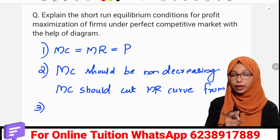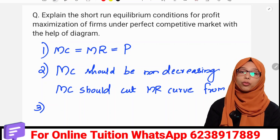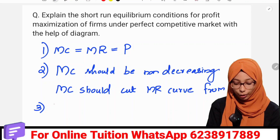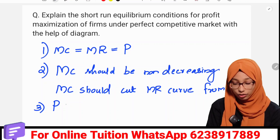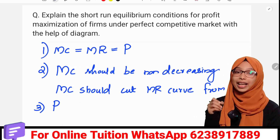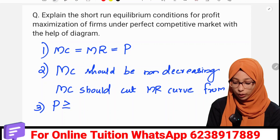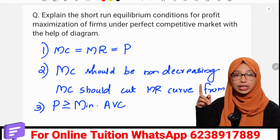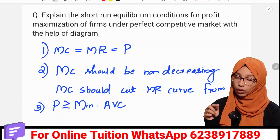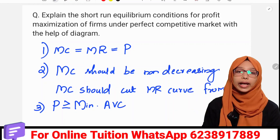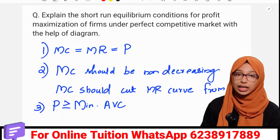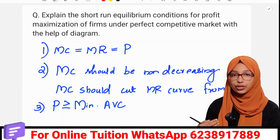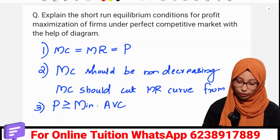At the Q0 level of output, the third condition is that the price should be greater than or equal to the minimum of Average Variable Cost. So the price should be greater than or equal to the minimum of AVC. That is the condition.